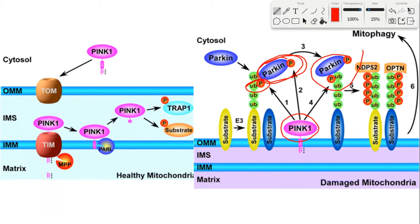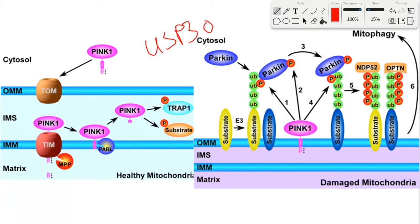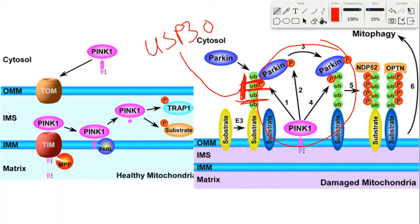Parkin will then catalyze the polyubiquitination of various outer mitochondrial membrane proteins using these phosphorylated ubiquitin proteins. Not shown in this image is the counteracting activity of USP30. USP30 is the only mitochondrial outer membrane-localized deubiquitinase capable of reversing or counteracting Parkin-mediated ubiquitination. So USP30 is basically the counteracting force in this process. In the next slide we'll talk about how polyubiquitination actually leads to engulfment of the mitochondrion by autophagy.